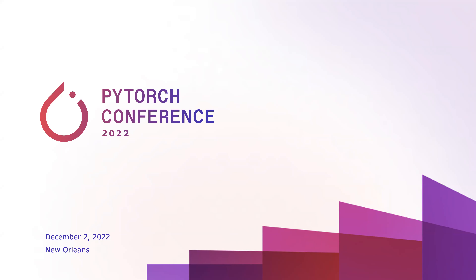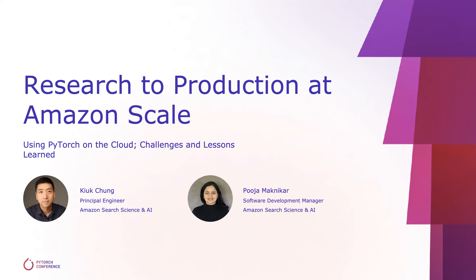I've been working at Amazon for about six and a half years. In the middle, I left Amazon to work for PyTorch at Facebook for about three and a half years. I authored libraries around PyTorch like TorchElastic, which is now part of PyTorch Distributed, and TorchX. This talk was co-authored by myself and Pooja — all the credit to her.